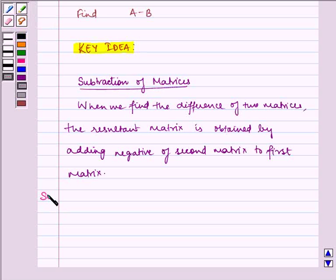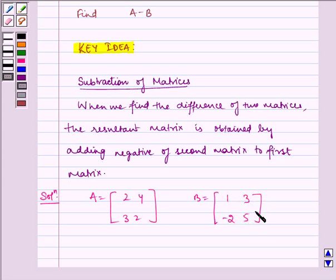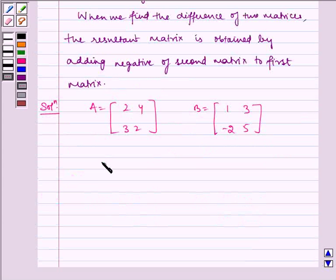Now, let us write the solution. Given to us is A equals [2, 4; 3, 2] and B equals [1, 3; -2, 5]. So, negative B equals [-1, -3; 2, -5].